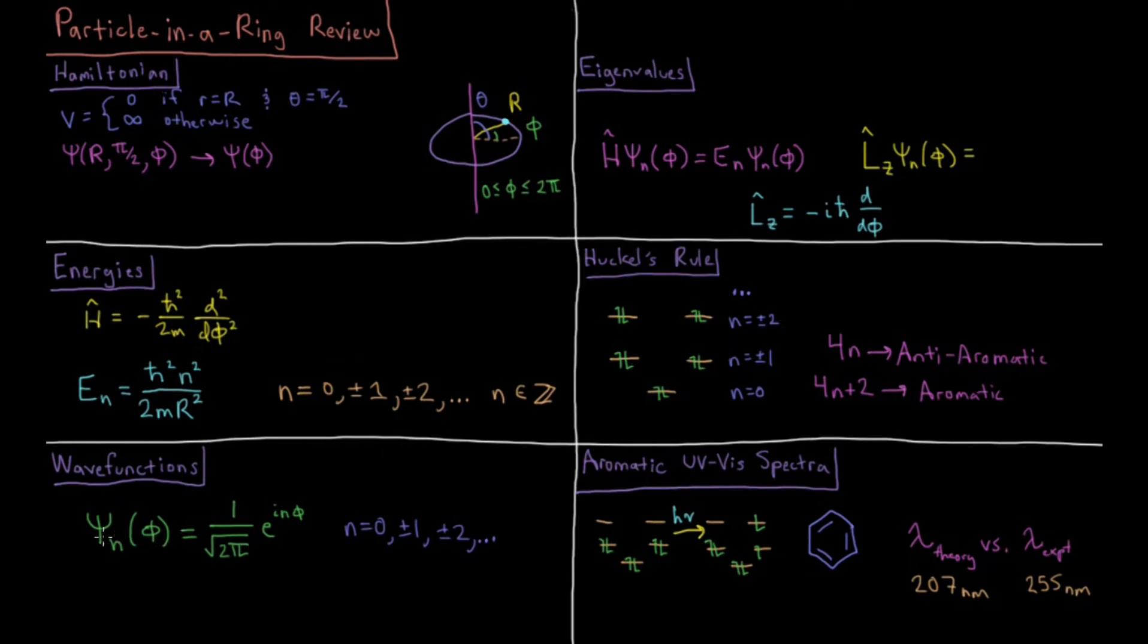Our wave functions, psi n of phi, denoted by our quantum number n, equals normalization constant 1 over square root of 2pi, complex exponential e to the i n phi, i being the square root of minus 1. And again, n is restricted to integer values, but the integer values can be positive, negative, or zero this time.